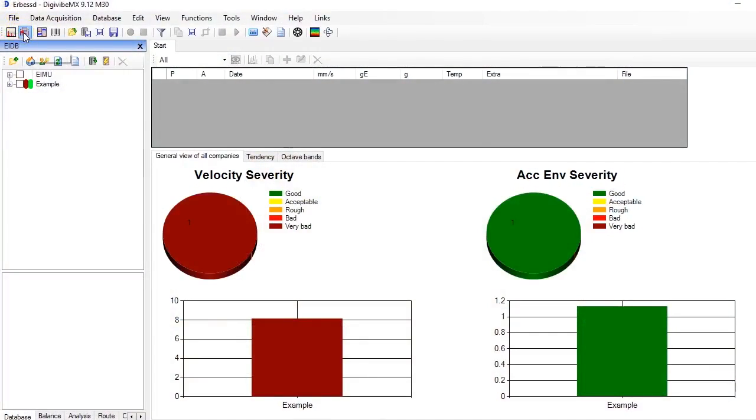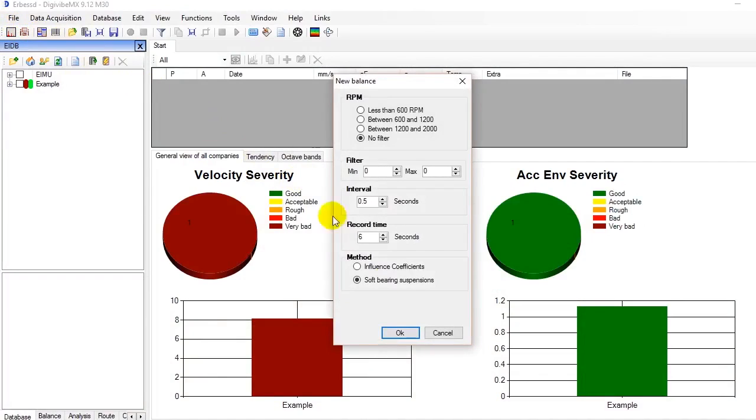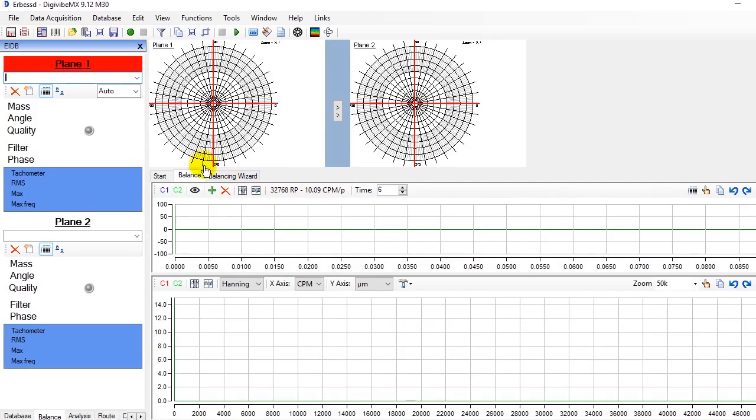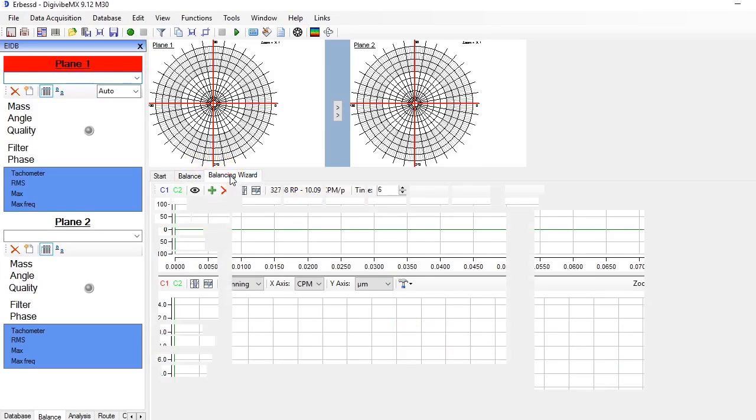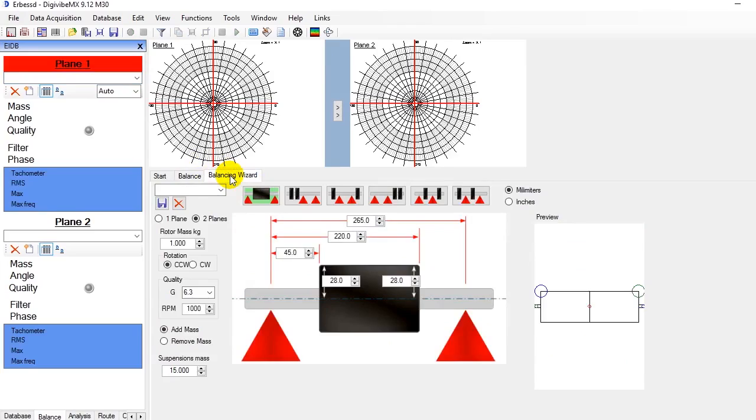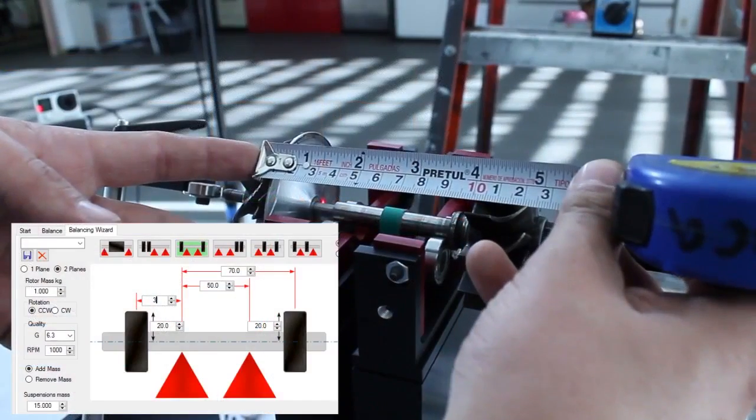Select New Balance. We select the parameters for the type of rotor we want to balance. No filter if we don't know the rotation speed. Record time between 3 and 6 seconds are convenient for rotors turning above 700 RPM. Finally, we select Soft Bearing Suspensions mode. On the Balancing Wizard tab, we choose the diagram looking the most to our rotor and we input the dimensions requested on it.